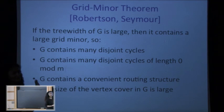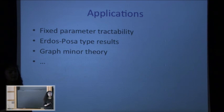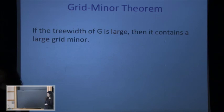In fixed-parameter tractability they really just take the grid minor theorem and use it — it's very convenient. Because of this, the theorem has been used a lot in fixed-parameter tractability and also in graph minor theory for Erdős–Pósa-type results.